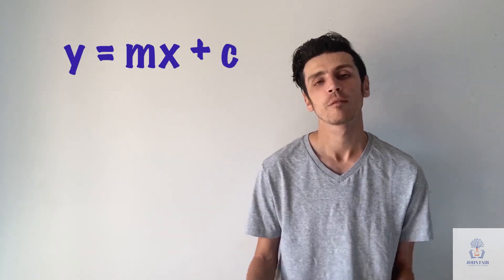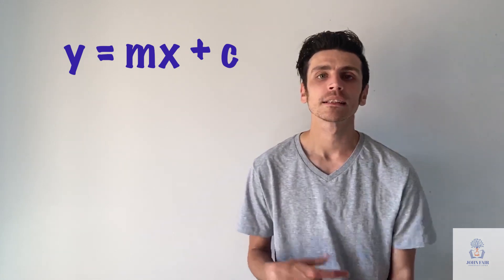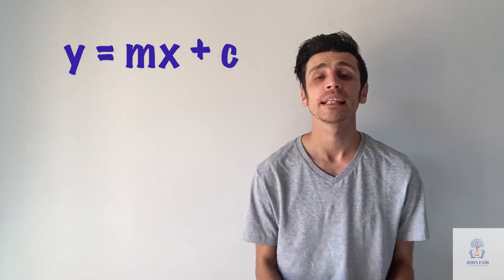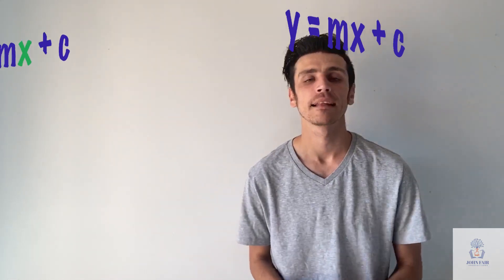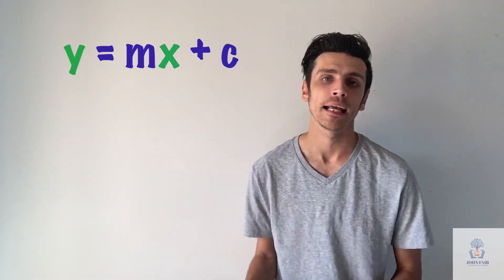Now when we're looking at our equation of a straight line, we've got y, we've got m, we've got x, and we've got c. Some of these can be numbers while some of these have to be in its letter form. So I'll start with the two that have to be in their letter forms, which are y and x.